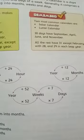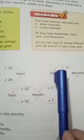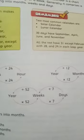When we have to convert years to months, we multiply the year by 12. But if we have to convert months to years, then we divide by 12.